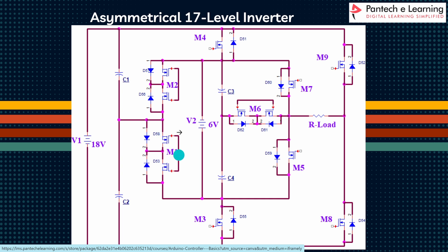M1, M2, and M6 are the 4-quadrant devices. The remaining — M4, M3, M7, M5, M9, and M8 — are the 2-quadrant MOSFETs.